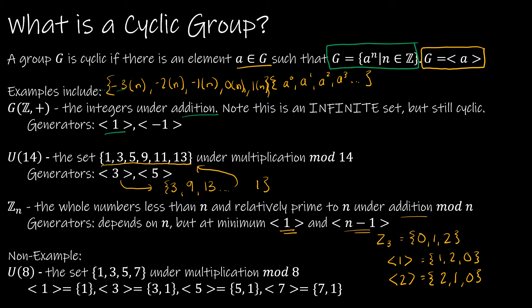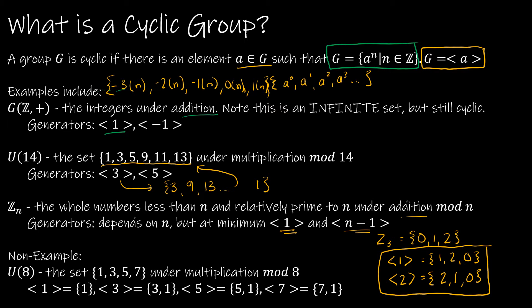Quick note: if you're in my class and watching this video, when you give me a cyclic subgroup, I do want to see it in the order in which it is generated. A lot of students want to jump ahead and say 2 gives us 0, 1, and 2 — but it doesn't give it to us in that order, so I want to see the actual order. A non-example would be U8, similar to U14 with four elements. But if we look at the elements generated by 1, we just get 1; by 3 we get 3 and 1; by 5 we get 5 and 1; and 7 gives 7 and 1. None of those generate every single element in the set, so U8 is not a cyclic group.